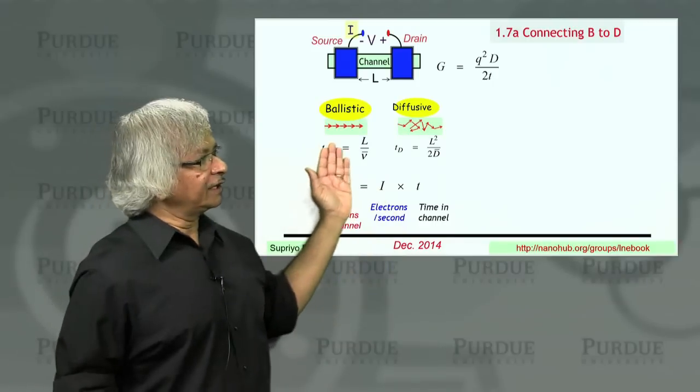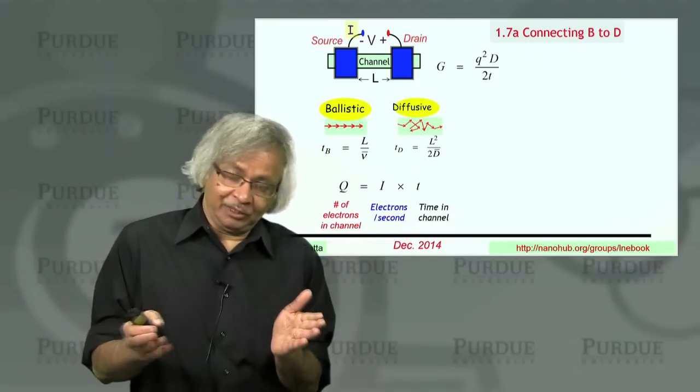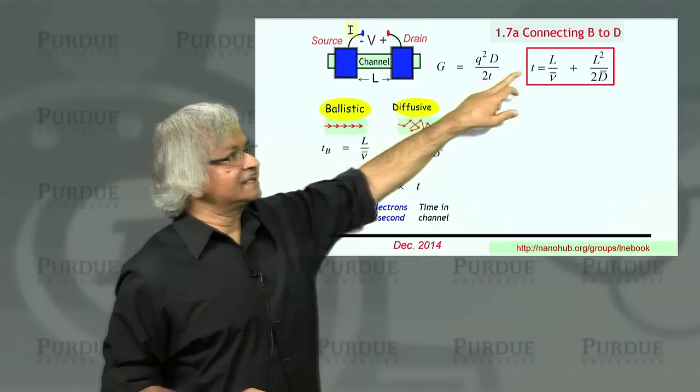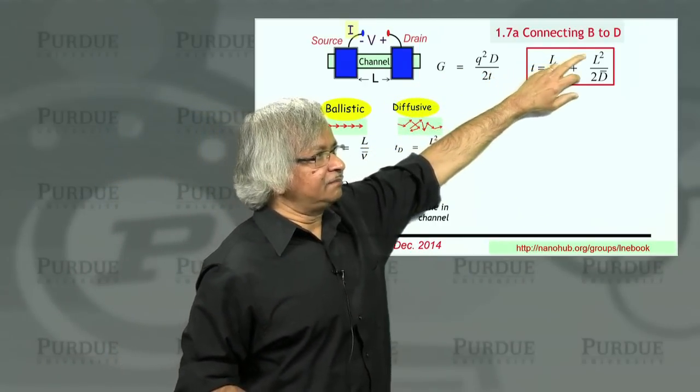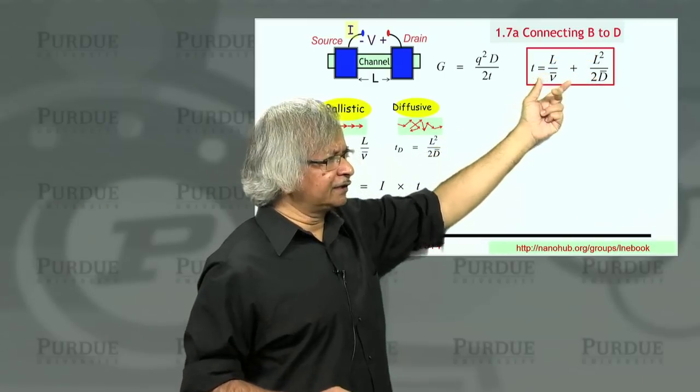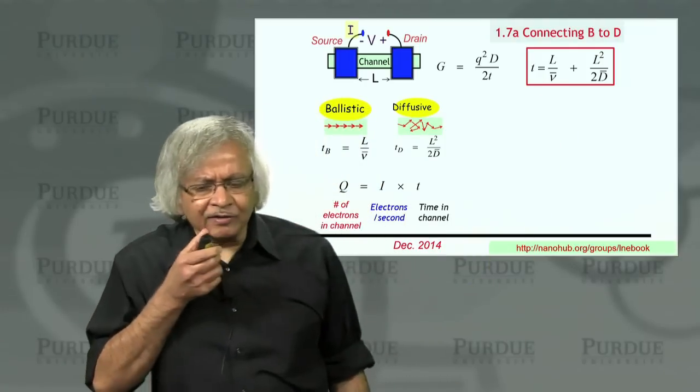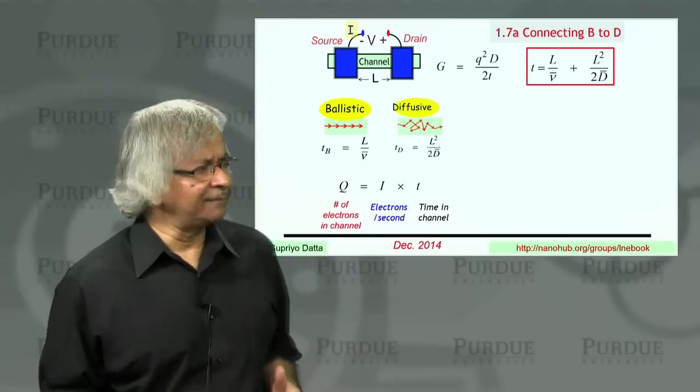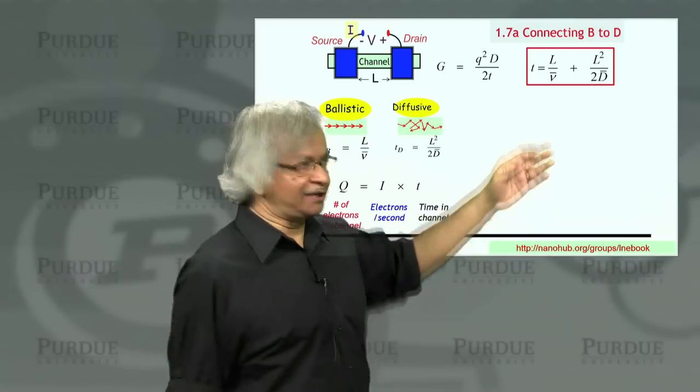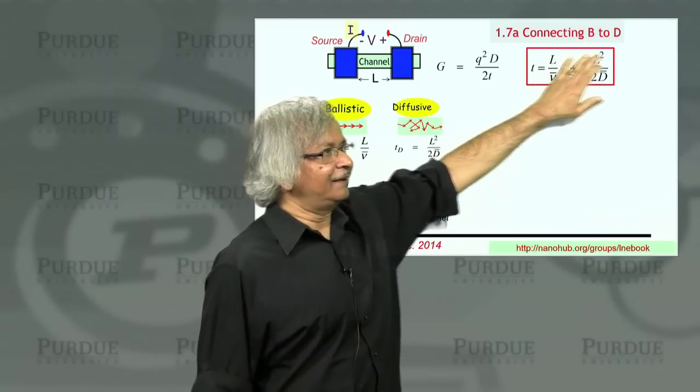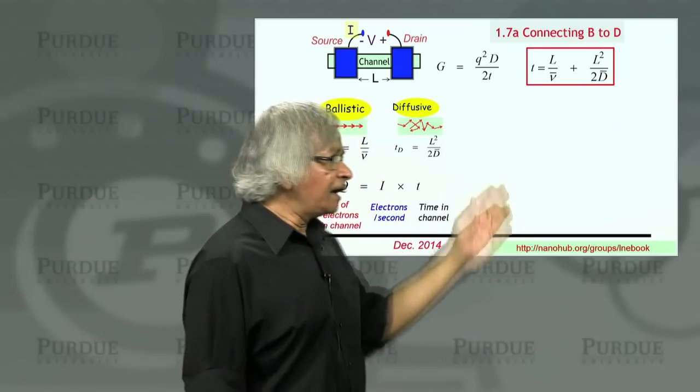Now, the way you can get a general answer that would work for both limits and in between is to write the time as this L over V bar, the average velocity, plus L squared over 2D. It might look a little surprising how you are adding the two. One way to justify it would be to say you are writing the time like a polynomial expansion, L, L squared. In principle, there could have been an L cubed, et cetera.